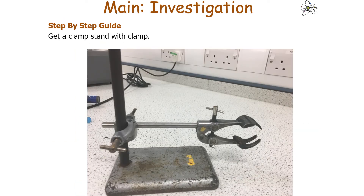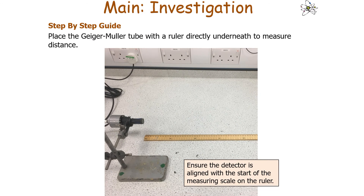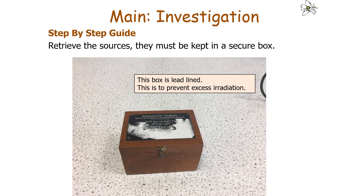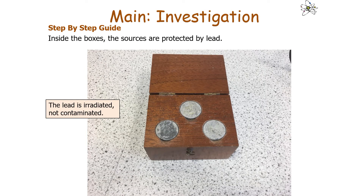Place the Geiger-Müller tube with the ruler directly underneath it to measure the distance. It is very important to ensure the detector is aligned with the start of the measuring scale on the ruler, otherwise you would get a zero error on your results. The radioactive sources are kept in a secure lead-lined box to prevent excess irradiation. The lead is irradiated, not contaminated, because the radiation is only passing through it — the nuclei are not coating the lead.